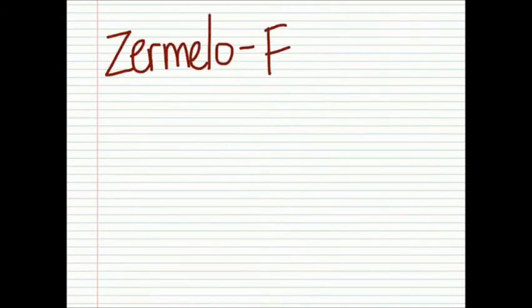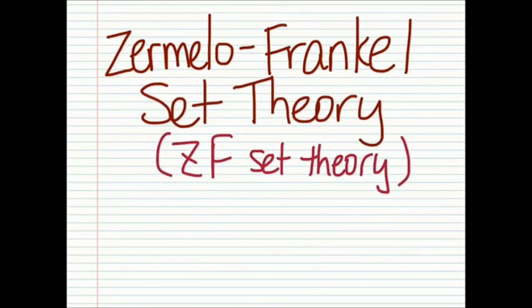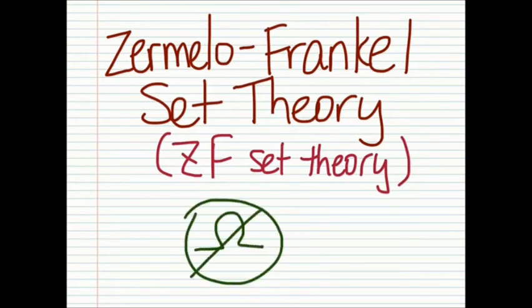The set theory today is the Zermelo-Fraenkel set theory, which avoids the paradoxes of the naive set theory. Basically, omega does not exist in this model.